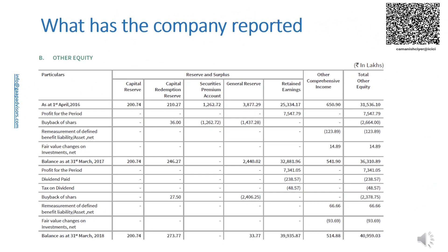In the previous video, I had commented that the other equity section of the statement of changes in equity presented by the listed company has more than one issue, and had discussed the lack of presentation of a separate line item for total comprehensive income for the period in the other equity section of the statement of changes in equity as non-compliance with IndAS 1 and Schedule 3 to the Companies Act 2013. Paragraph 106 of IndAS 1 requires transactions with owners in their capacity as owners to be disclosed separately from total comprehensive income for the period.